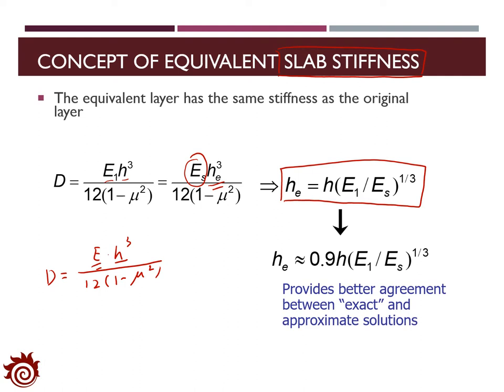In reality, due to the complexity of the materials, we need to multiply by 0.9 for the estimation of the equivalent thickness, and this should be applied for a two-layer system. If it is applied for a multi-layer system, then we multiply 1.0 for the first layer, and for the rest of the layers, we multiply them by 0.8. With this adjustment, we can get a more accurate approximation of the equivalent thickness.